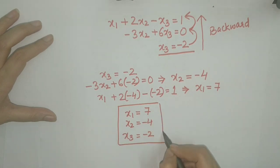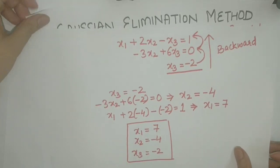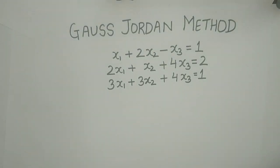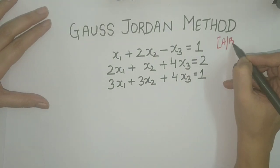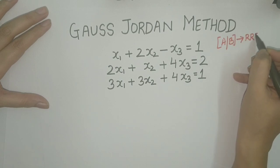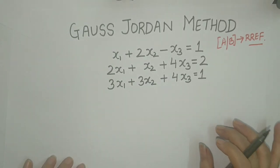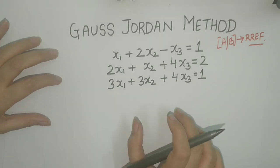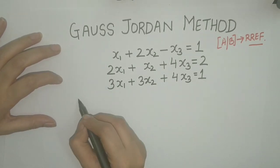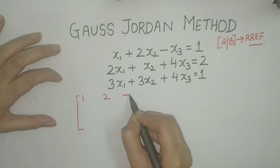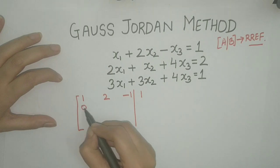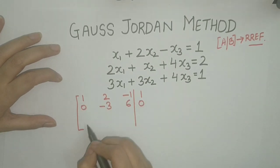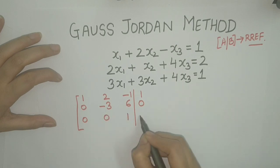Let us take the same example and solve it by Gauss-Jordan method. In Gauss-Jordan method, we reduce the augmented matrix to reduced row echelon form. Since we have considered the same problem, we already have the echelon form. The echelon form we found previously was [1, 2, −1 | 1; 0, −3, 6 | 0; 0, 0, 1 | −2].